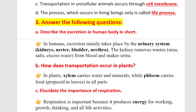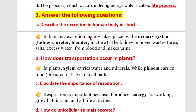Question B: How does transportation occur in plants? In plants, xylem carries water and minerals while phloem carries food prepared in the leaves to all parts. This xylem and phloem is called the transport pipe system of plants.